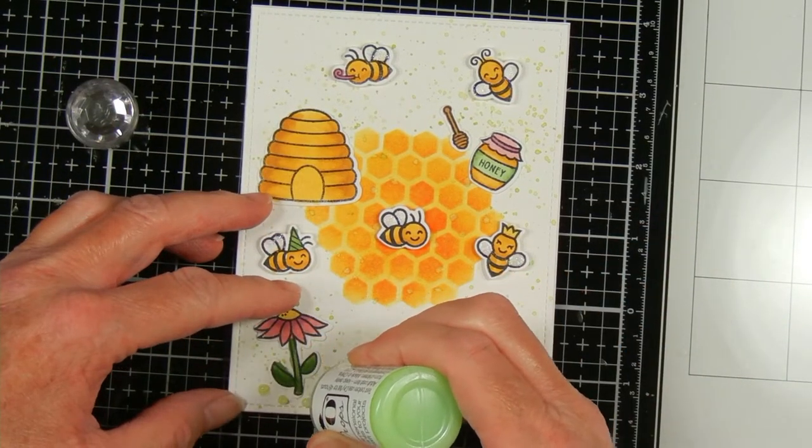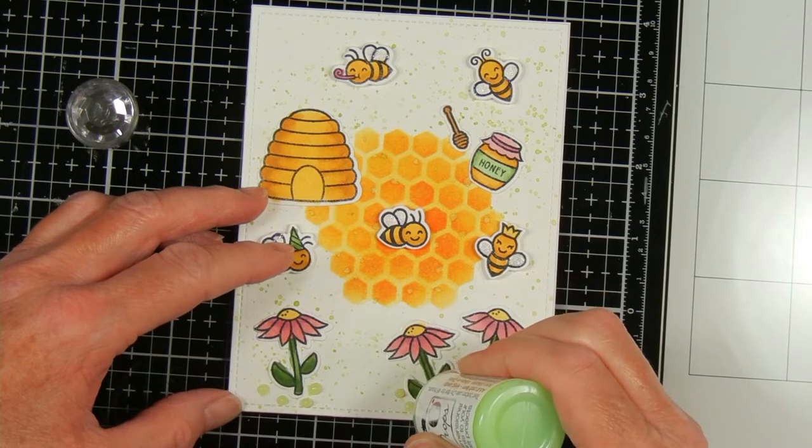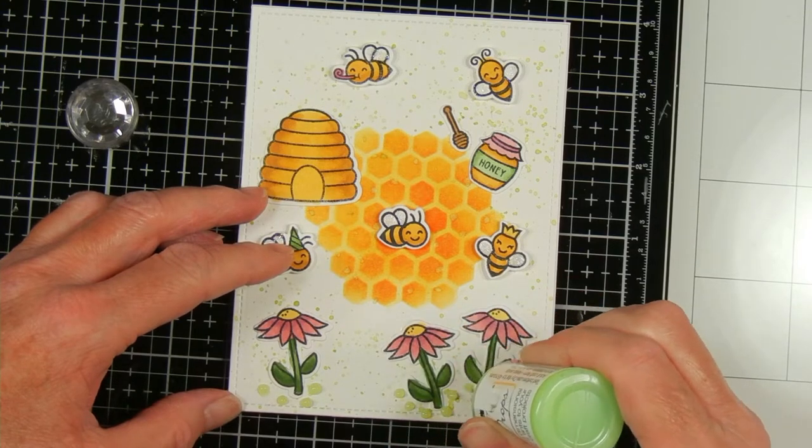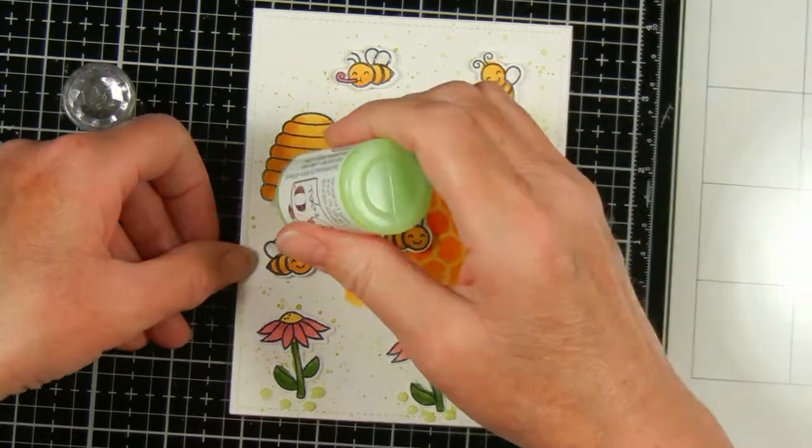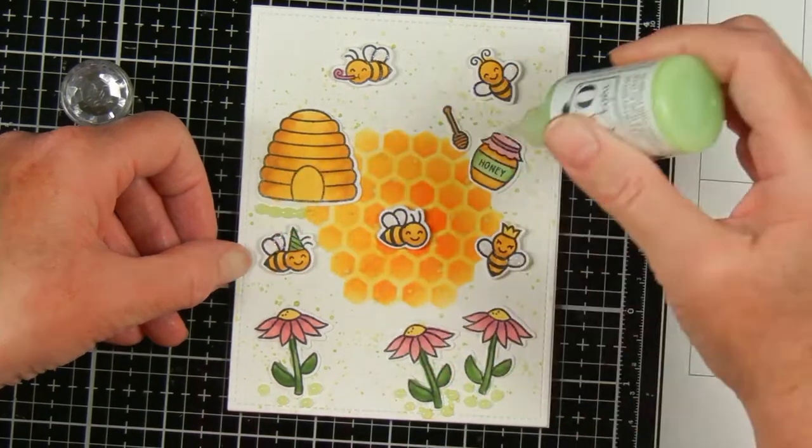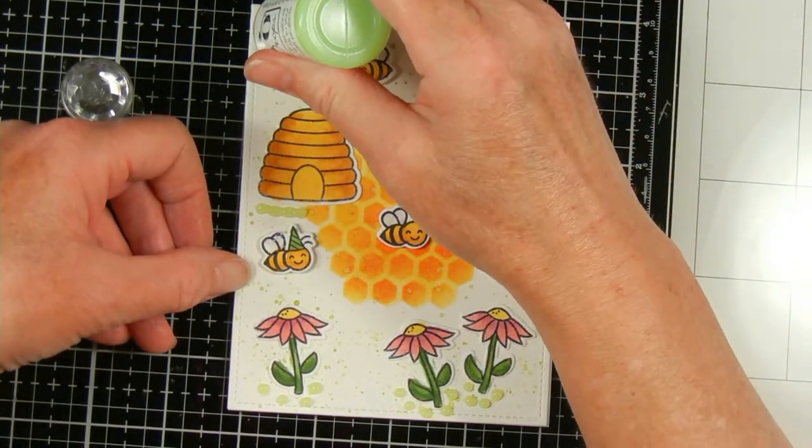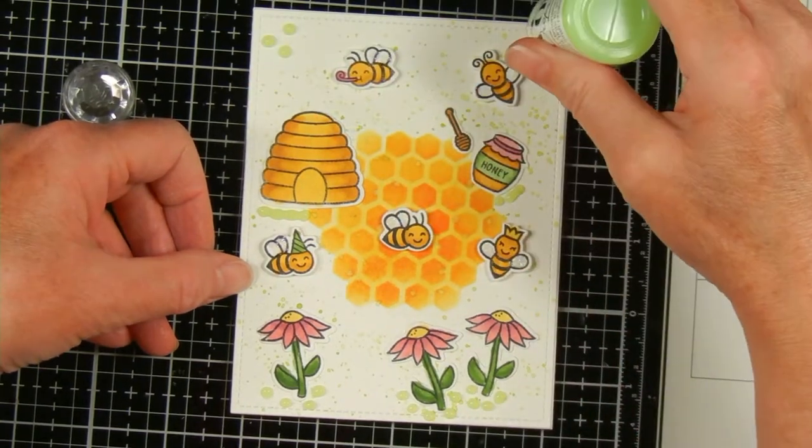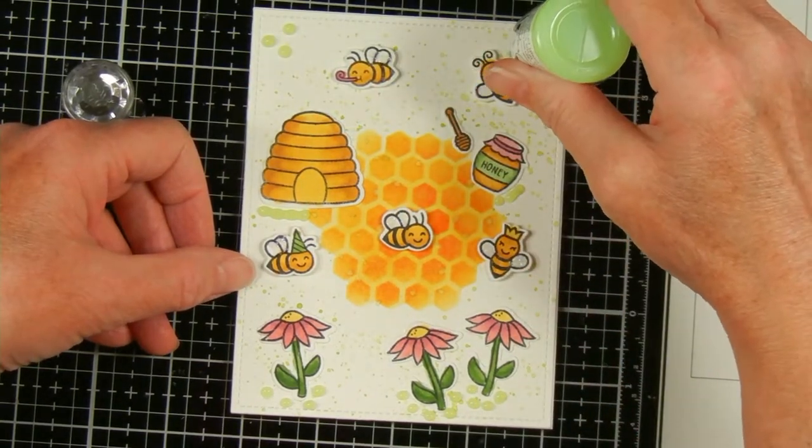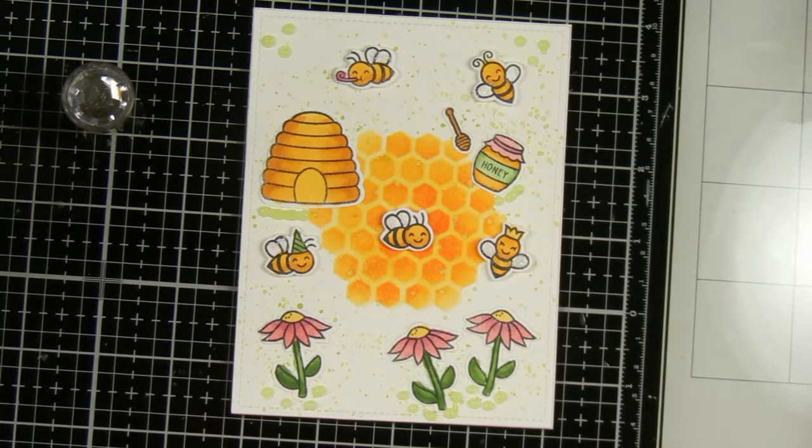As a final embellishment I'm adding these Nuvo Jewel Drops and these are called Very Lime. I like this color. It kind of goes along with the sage color green that's in the challenge. Although it is a little bit brighter. But I really like it. It's a pretty color. I'm adding those just where I think it needs a little bit something extra.